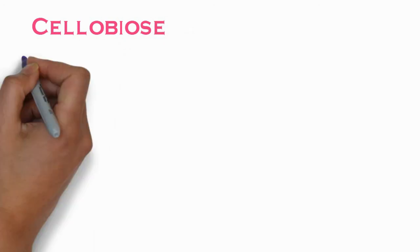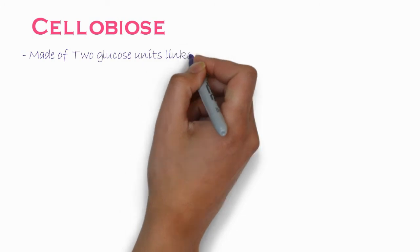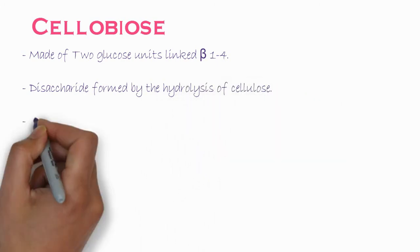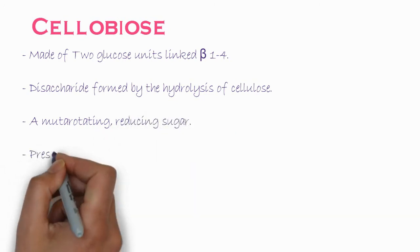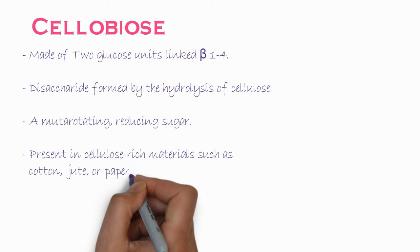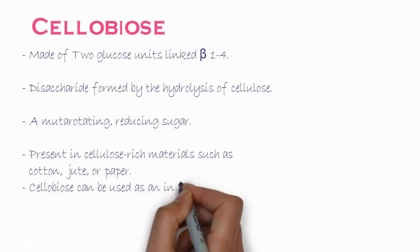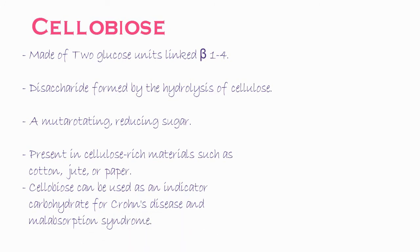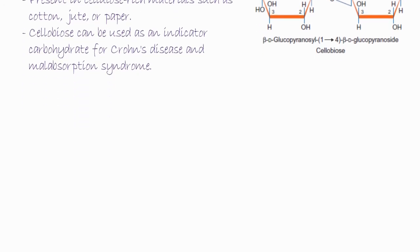The next important example is cellobiose. It is a disaccharide made of two glucose units linked by a beta-1,4 glycosidic bond. It is formed by the hydrolysis of cellulose, which is a polysaccharide. Cellobiose is mutarotating and a reducing sugar. It is present in cellulose-rich materials and foods such as cotton, jute, and paper. It can also be used as an indicator carbohydrate for diseases such as malabsorption syndrome.